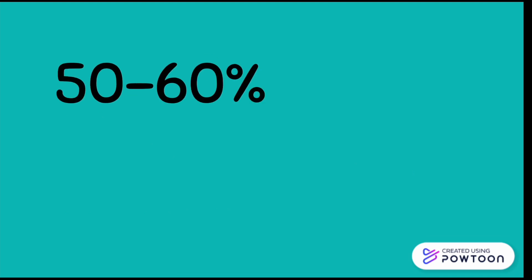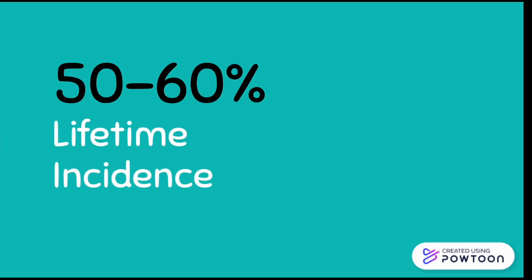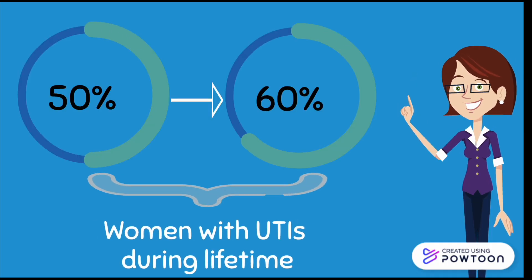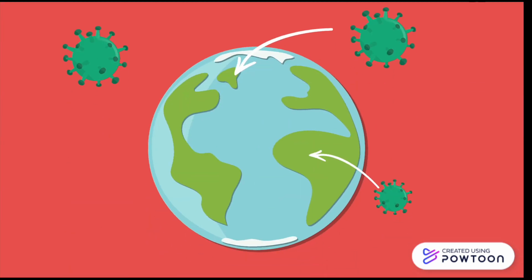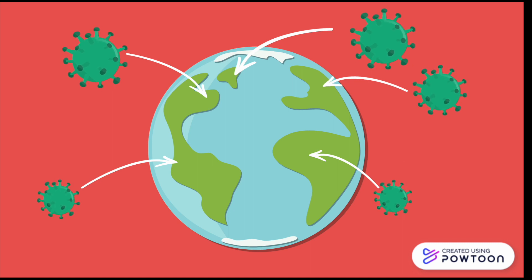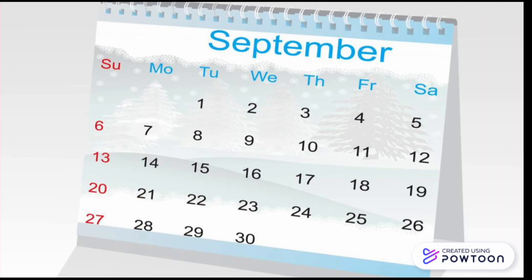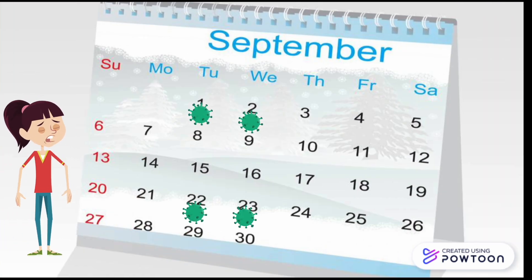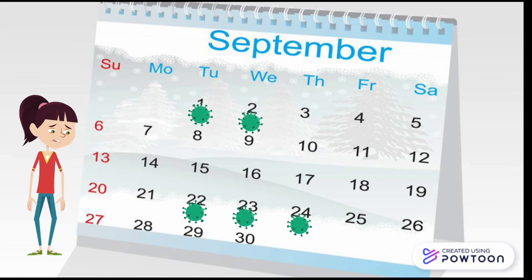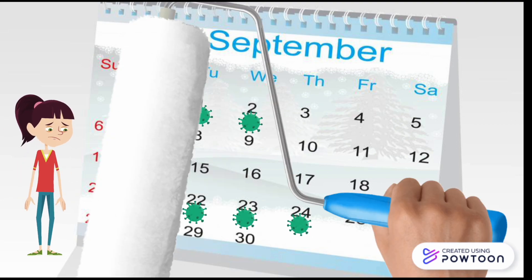Now, why is understanding the topic of UTIs important? As previously mentioned, it is the most common outpatient infection. The infection has a 50–60% lifetime incidence in adult women, meaning that this is the percentage of female individuals who will have the disease during their lifetime. This illustrates how widespread the infection is throughout the population. Research shows that women who suffer from frequent UTIs have their quality of life impacted.